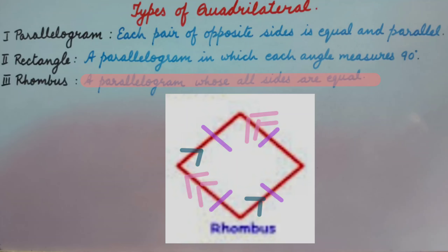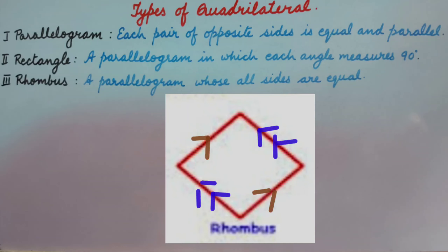Rhombus. A rhombus is a parallelogram whose all sides are equal. In a rhombus, opposite sides are also equal and parallel.